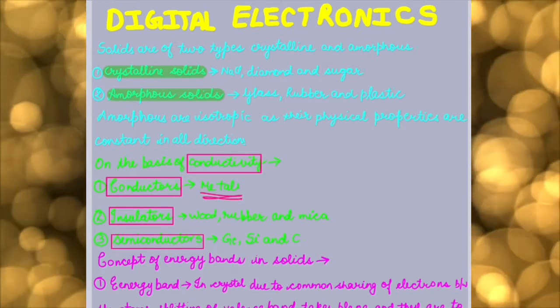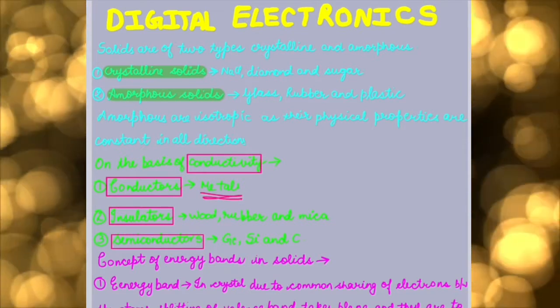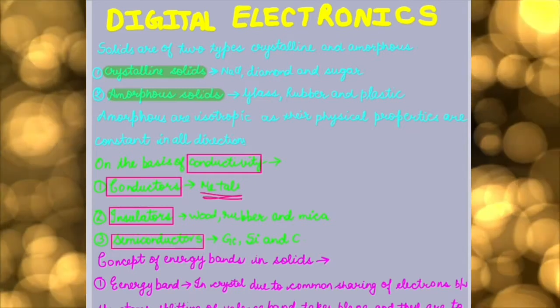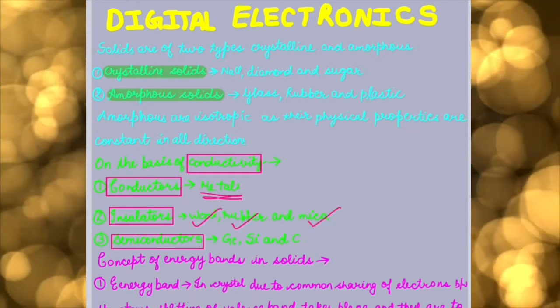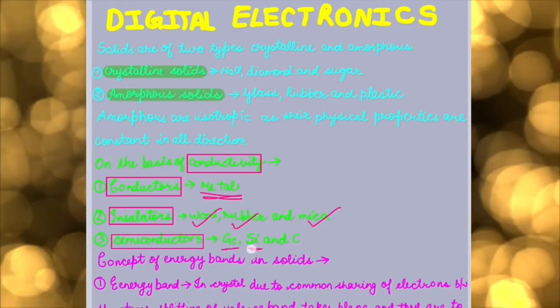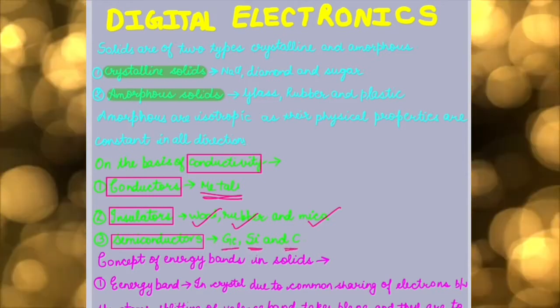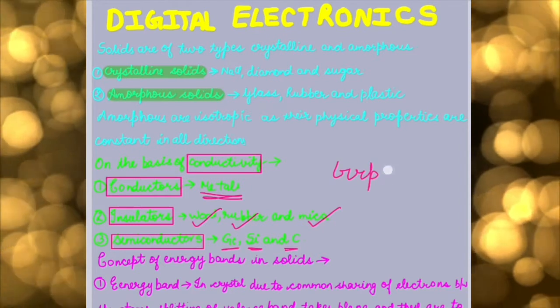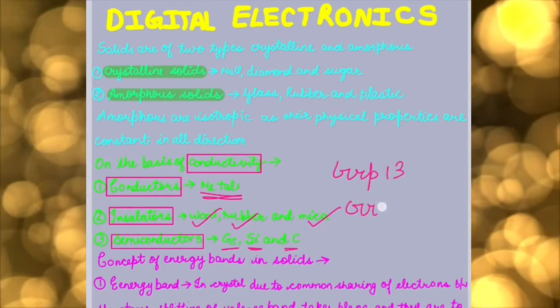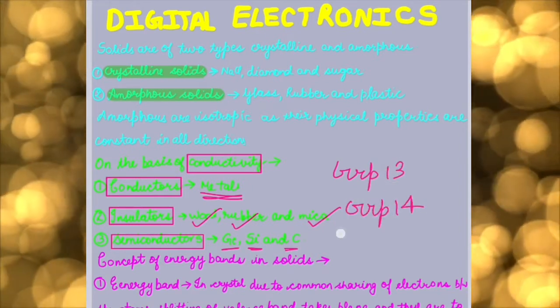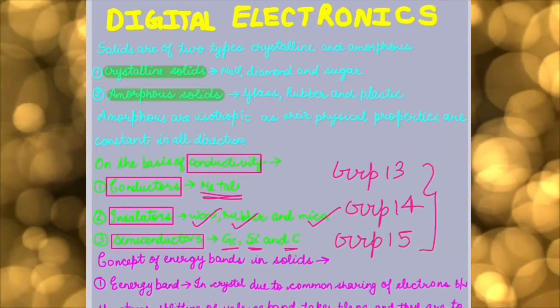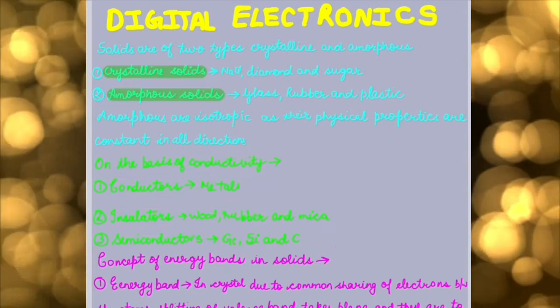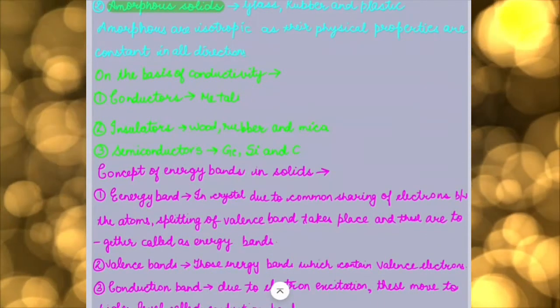Insulators which have no free ions and cannot conduct electricity, like wood, rubber, and mica. Semiconductors like germanium, silicon, and carbon which lie in group 13, group 14, and group 15. These three groups constitute the semiconductor elements.